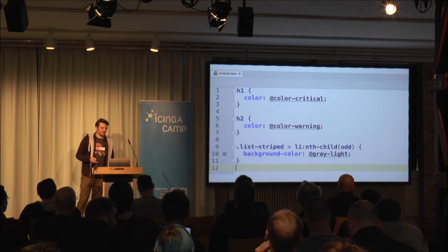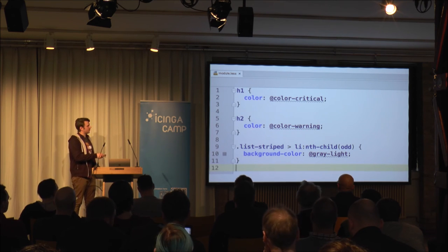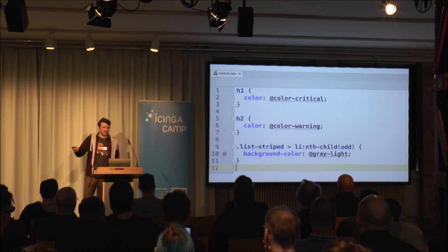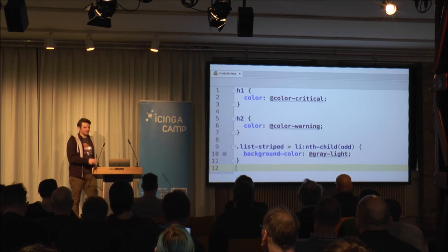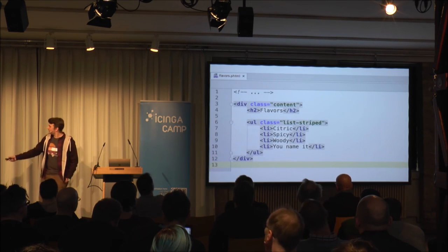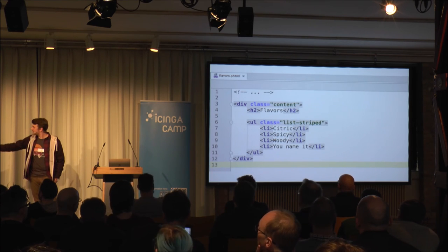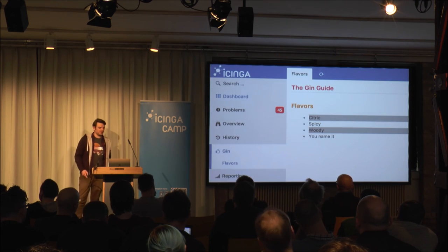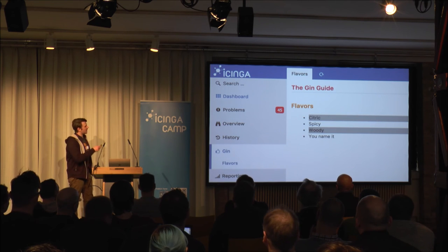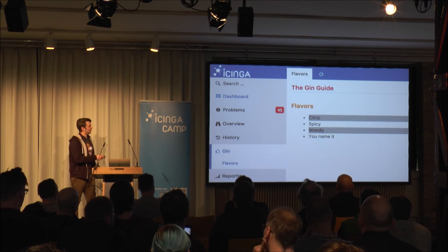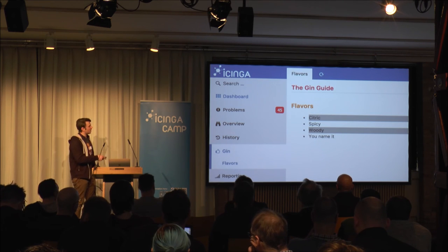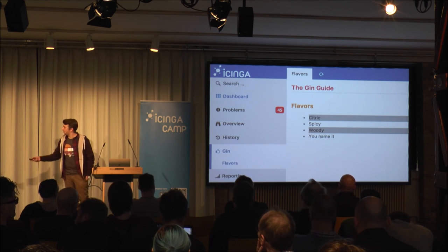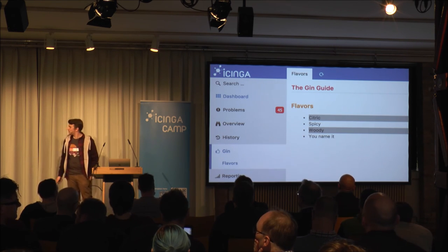The file is public/css/module.less. We do some basic styling of h1 and h2 as an example for isolated CSS, and we add a class 'list-striped' where every odd child of the list will have a gray background. These styles are effective because we have unstyled HTML elements, and for the list-striped thing we extend our view script to put the list-striped class on our list element. The result: a red headline, a yellow headline, and striped list for flavors.